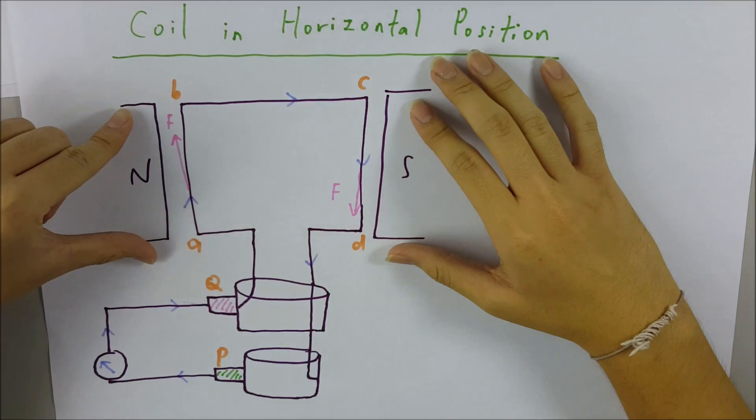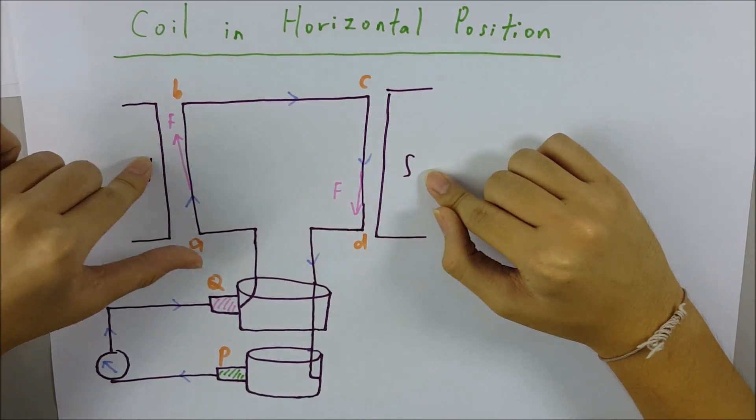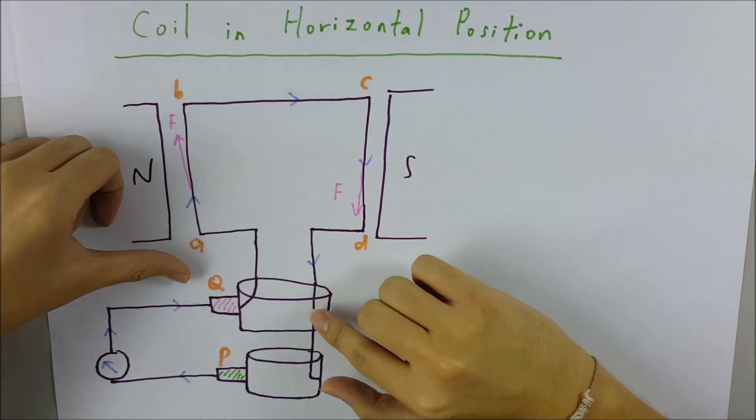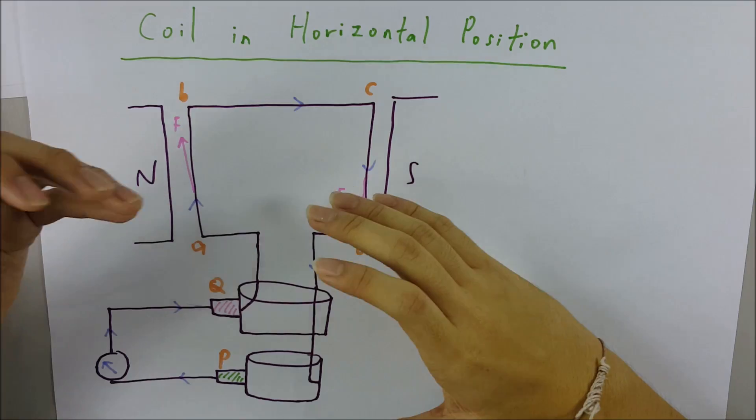Okay, so this is the permanent magnet with north pole and south pole, and we have a coil and two slip rings, and it's different from the DC generator.